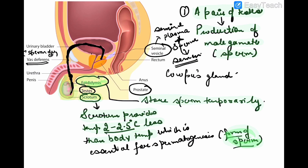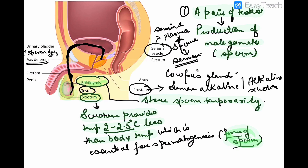The prostate gland makes semen alkaline due to its alkaline secretion, which it pours into the sperm. The third gland, Cowper's gland, helps in lubrication of the penis.